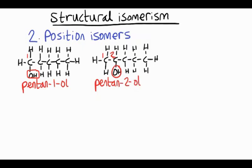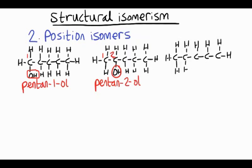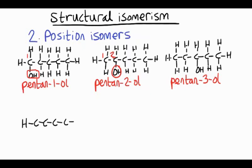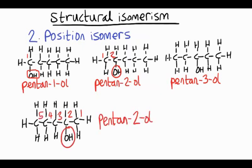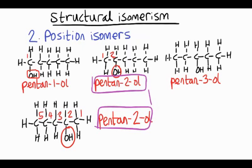Let's try moving the OH group along to the next carbon, putting the hydroxyl group on the third carbon. We've made another alcohol which we'd call pentan-3-ol. Notice they all have the same number of carbon, hydrogen, and oxygen atoms — same formula, different structure, so they're isomers. Now let's put the OH group on the fourth carbon. This time we number from right to left to keep the numbers as low as possible, and we get pentan-2-ol again — the same as the one before. Since these two are the same, we can't move the OH group any further.